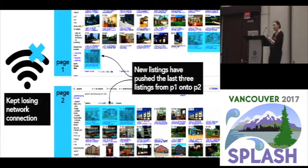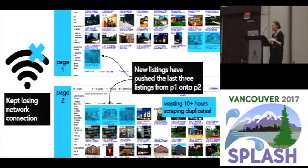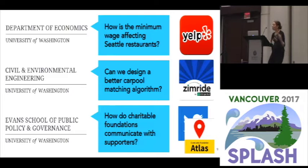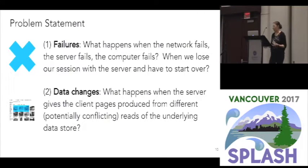The way Craigslist pagination works is: when you press next to get to the next results, it indexes into the current master list. So if three items have been posted to Craigslist between when you loaded page one and when you loaded page two, everything is pushed back three slots — the last three items from page one are now the beginning of page two and you see them again. This is not a big deal if you get a few repeats, but it turns out Craigslist was getting so much new data so quickly that the script was wasting ten hours a day just scraping the same stuff it had already scraped that same day. We kept seeing variations of these exact same problems over and over: failures where the network, server, or computer fails and we have to start over, or data changes where you're not getting a single atomic read but one read per web page loaded.